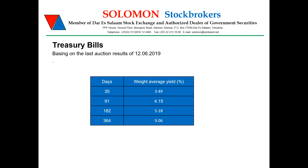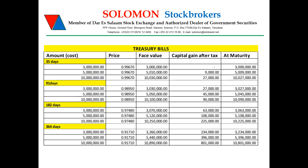According to the last auction, these were the returns of these treasury bills. Here we have a simple illustration of what an investor might get if he invests in these treasury bills. If an investor invested 3 million Tanzanian shillings in a 35-day treasury bill, that treasury bill will have a face value of 3 million — so this investor will almost get nothing. But an investor who invested 5 million in a 35-day treasury bill will have a face value of 5,010,000, meaning that investor will get a capital gain of 9,000 after deduction of tax, so the total gain will be only 9,000 from that particular treasury bill.